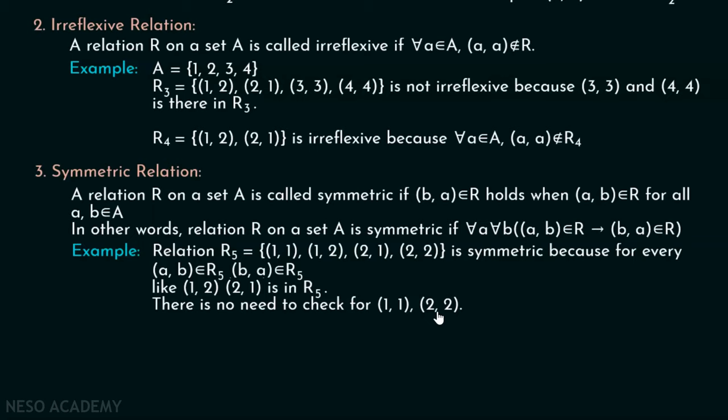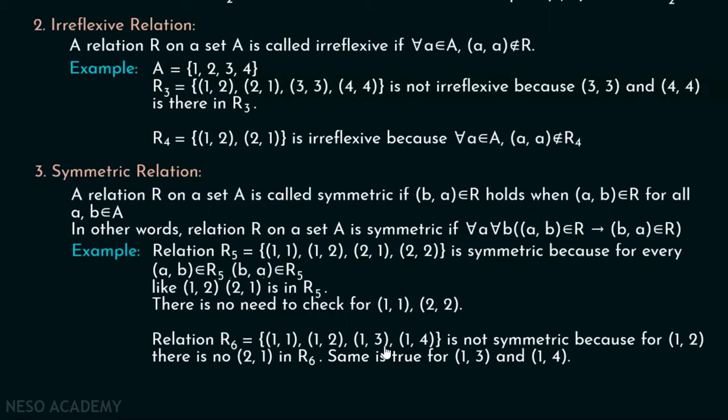Now let's consider one more relation. We have relation R6 which consists of ordered pairs: (1,1), (1,2), (1,3), (1,4). For (1,2) we do not have (2,1), so from this point itself we can say this relation is not symmetric. Similarly, for (1,3) we do not have (3,1) inside R6, and for (1,4) we do not have (4,1) inside R6. So it is clear that relation R6 is not symmetric at all.